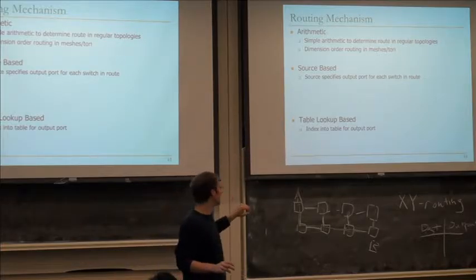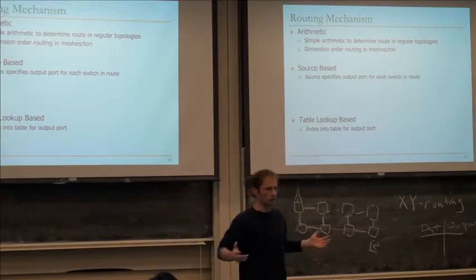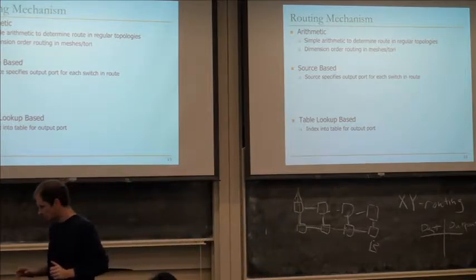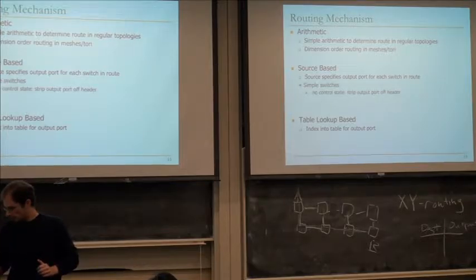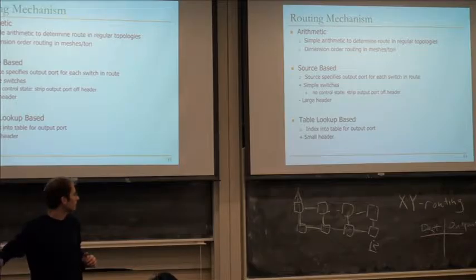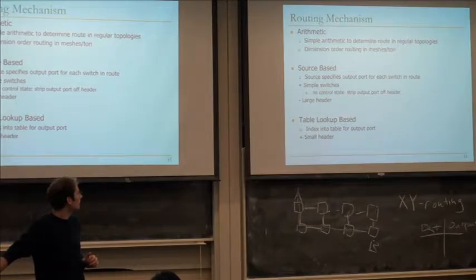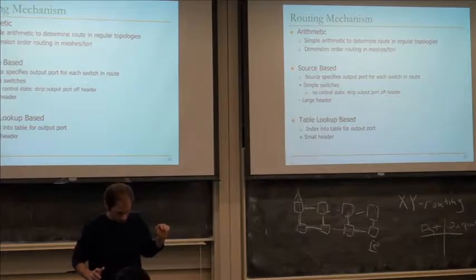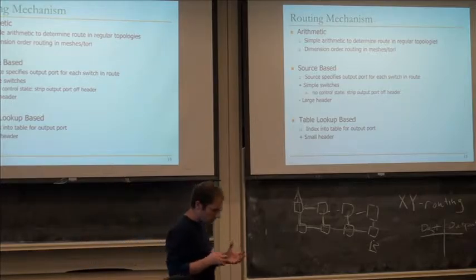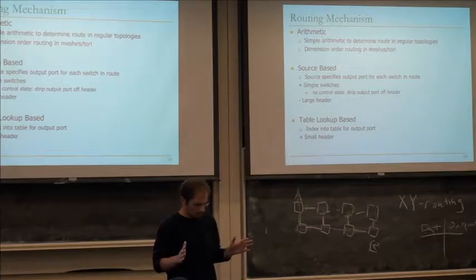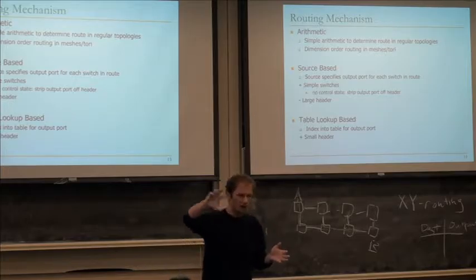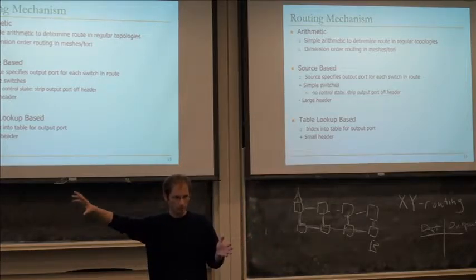There's also source-based routing, which is a middle point between arithmetic and table-based. When you send a packet into the network you append routing information — in the header or footer — listing the hops the packet needs to take. At each router you look at the first destination, route to that next hop, and peel it off, so the next router sees the next hop. Source-based is flexible since you can pre-compute any arbitrary route at the source, but it takes extra space in your packet. Table-based has a small header but needs lookup tables at every node.